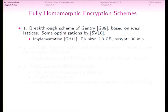Currently, there are three known families of fully homomorphic schemes. The first is the original scheme by Gentry, based on ideal lattices, with optimizations by Smart and Vercauteren. At last Eurocrypt, Gentry and Halevi described further optimizations and an implementation with a public key size of 2.3 gigabytes and a ciphertext refresh time of 30 minutes. This refresh must, in principle, be done after every homomorphic operation.